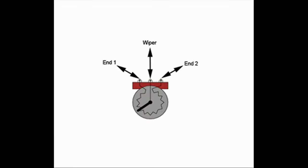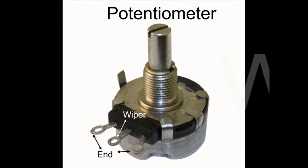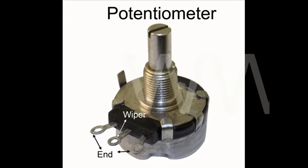Most potentiometers have three connectors. Two are the total and non-varying resistance of the potentiometer, referred to as ends, and the third is the variable resistance, referred to as the wiper.